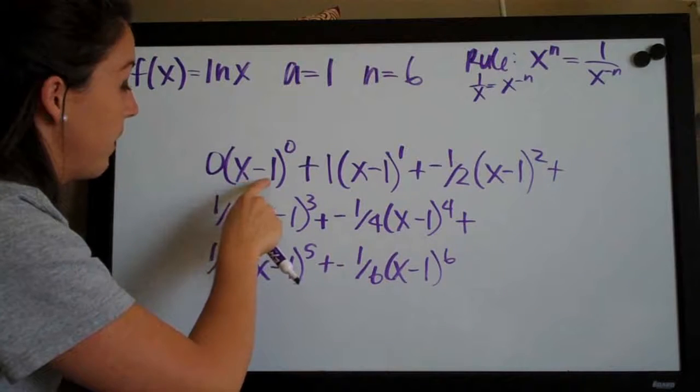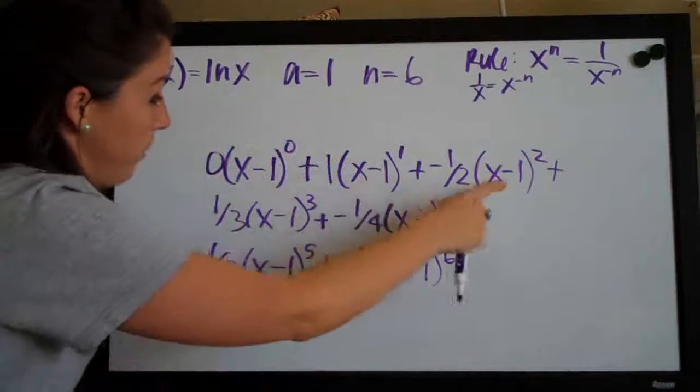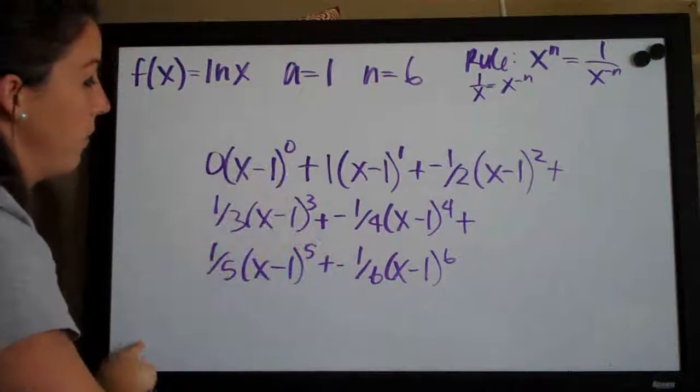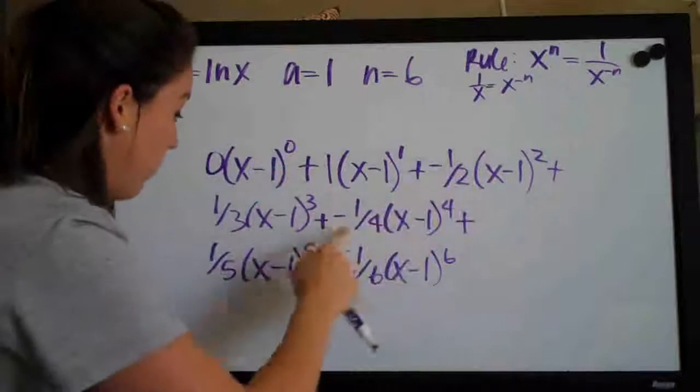X always stays the same. You always subtract whatever a is. So in this case one. And then our column here, k, we have as our exponent. Zero, one, two, three, four, five, six.